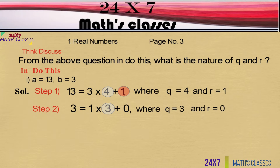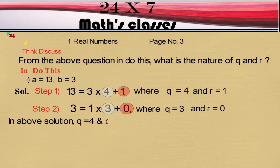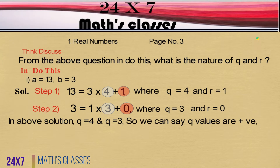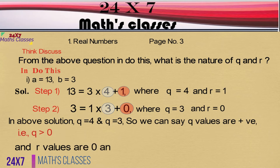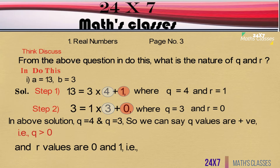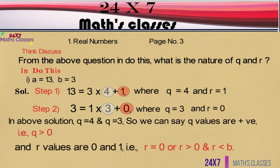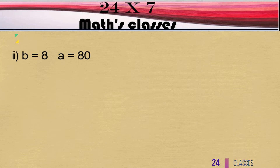In the above solution, q is equal to 4 and q is equal to 3, so we can say q values are positive, that is q > 0. And r values are 0 and 1, that is r ≥ 0 and r < b. Now we solve the second problem.